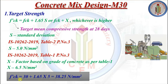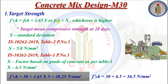Using these two values, we calculate the target strength f'ck. First formula: f'ck = 30 + 1.65 × 5 = 38.25 N/mm². Second formula: f'ck = fck + x = 30 + 6.5 = 36.5 N/mm². Among these two, 38.25 is higher, so we consider 38.25 N/mm² as the target strength.